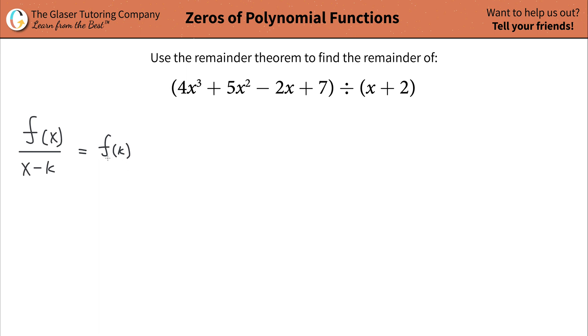In other words, what we have to do is find out what k is, and then we can just plug in k everywhere we see our x, and then we can solve that, and whatever that works out to be will be the value of your remainder.